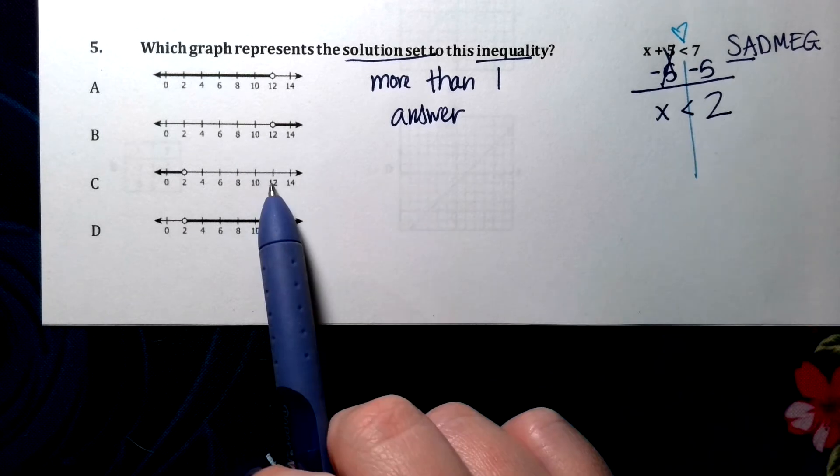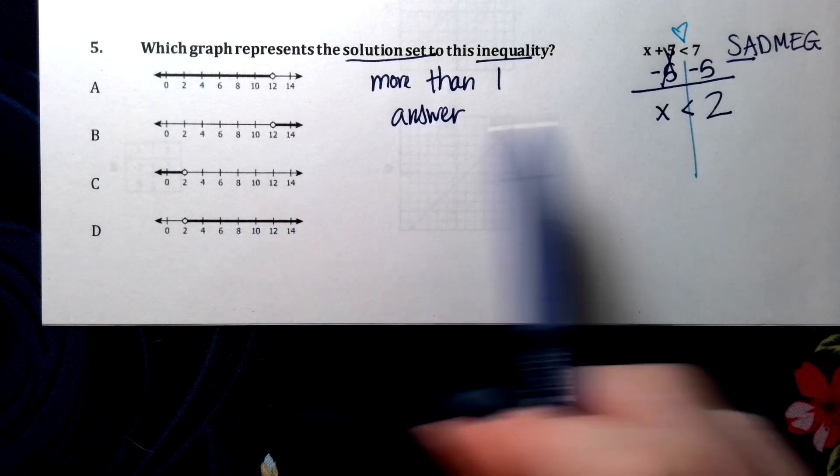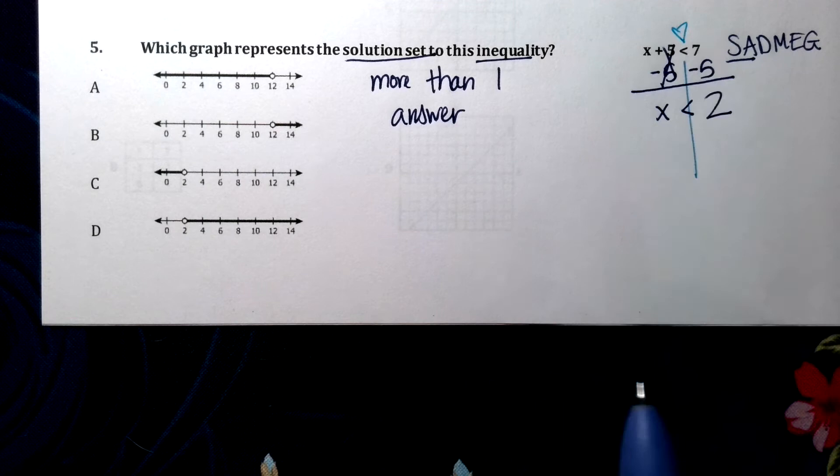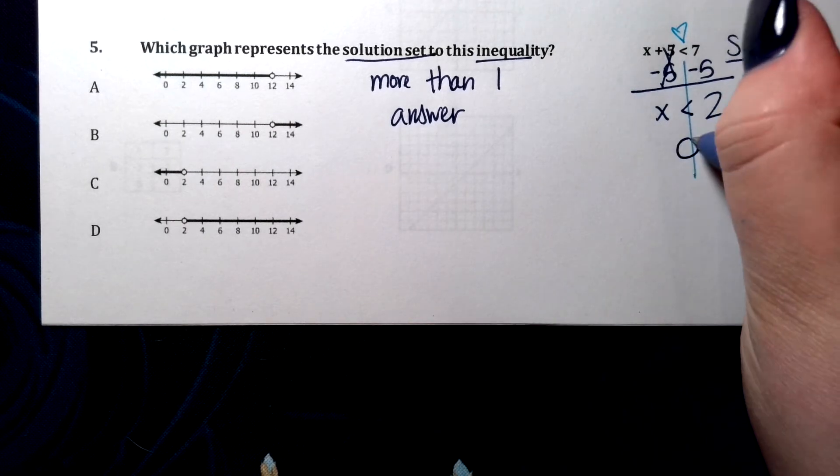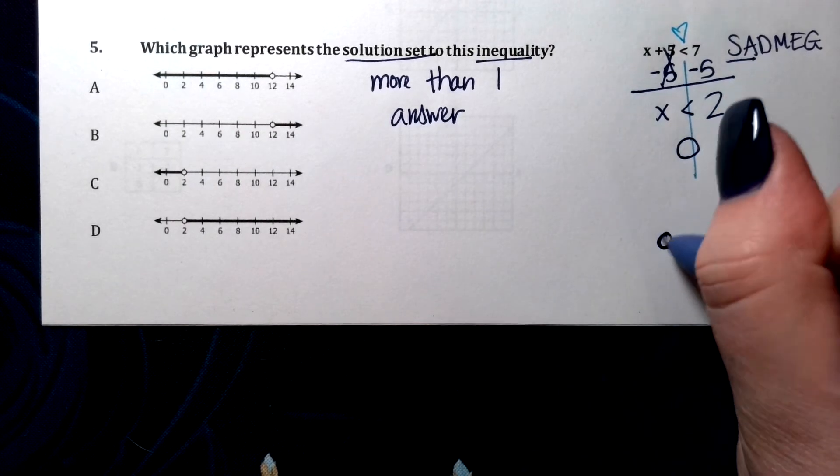So now I need to come back over here and see what matches this situation. If my sign looks like that, is that going to be open or closed circle? That's an open circle. It's only closed.